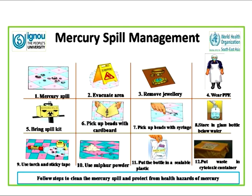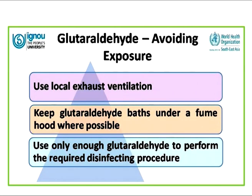Mercury spill management involves: evacuating the area, removing jewellery, wearing PPE, bringing in the spill kit, picking up beads of mercury with cardboard, using a syringe for remaining beads, storing picked-up mercury in a glass bottle under water, using a torch and sticky tape to pick up any remaining mercury, using sulphur powder as a precaution, then placing the sealed bottle in a sealable plastic bag and disposing in a cytotoxic container.